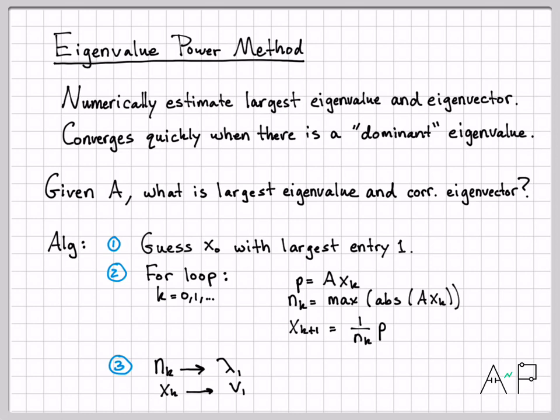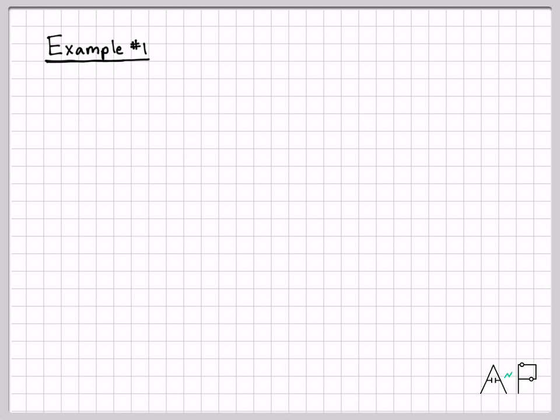That is the algorithm — it's called the power method. Let's go ahead and use that algorithm for an example. We'll start simple with a two-by-two matrix. Here's matrix A with entries 7, 9, 9, 7. We could easily compute the eigenvalues: the largest is 16 and the smallest is minus 2. For such a simple matrix you don't need this algorithm, but for a much larger matrix with maybe 50 eigenvalues, if you only need the largest one, this algorithm lets you figure that out very efficiently.